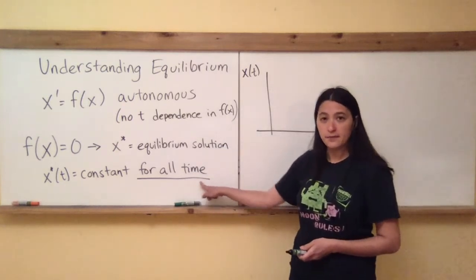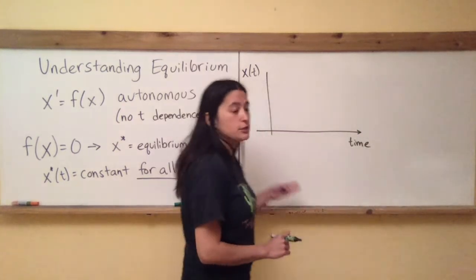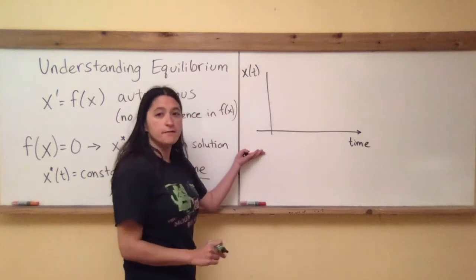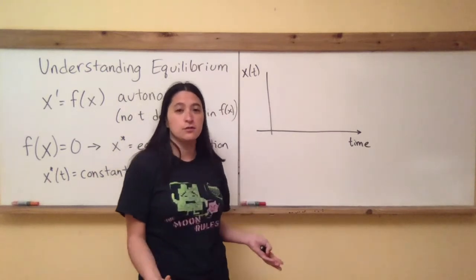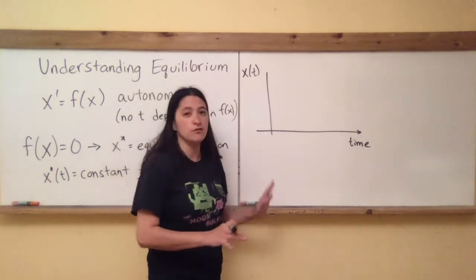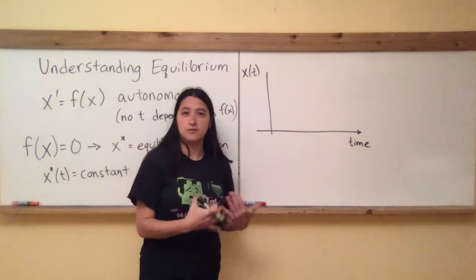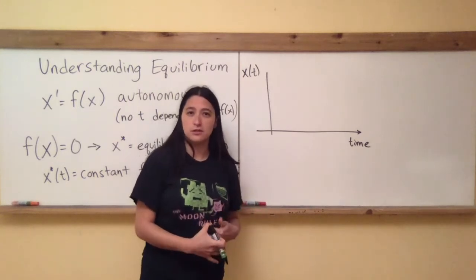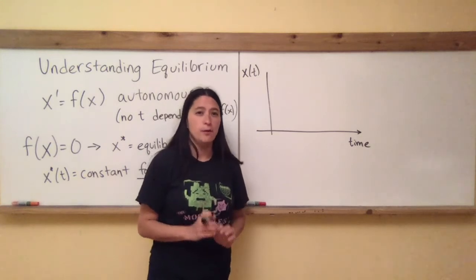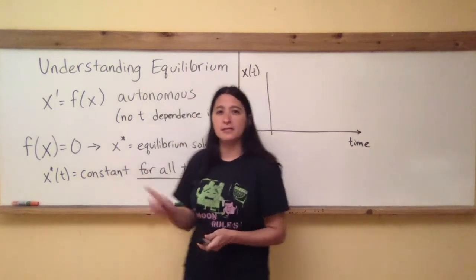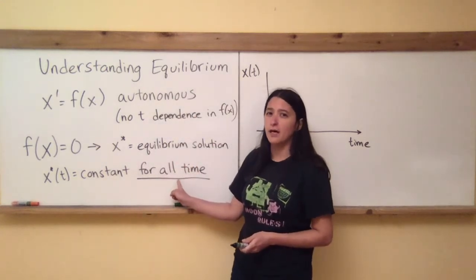These equilibrium solutions are constant values — they hold the value of x star for all time. That's a really important point. I'm going to draw a time series picture with several different solutions. I'm not going to write down any equations because the equations that would result in these solutions are a little complicated, but I'm just trying to make the point about equilibrium solutions being constant for all time.